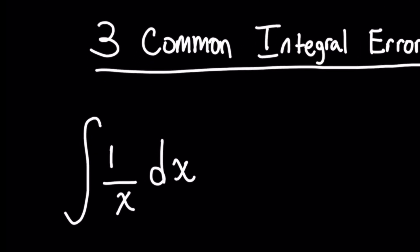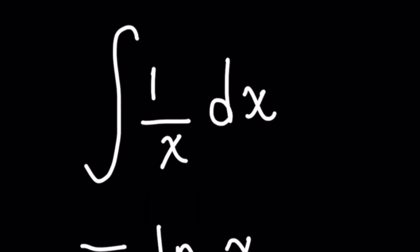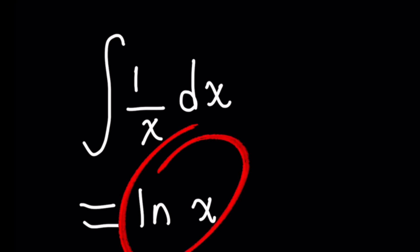The first integral is 1 over x dx. Now, you might be looking at this and thinking, oh well, the simple answer is natural log of x, right? Well, wrong. Let's dive into why.